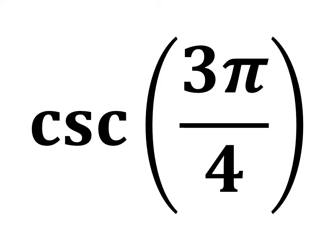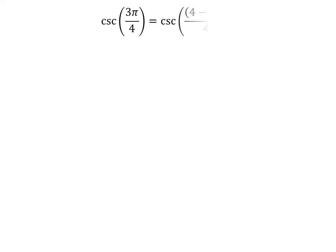In this video, we will learn to find the value of cosecant of 3 times pi upon 4. Two methods have been explained to find the value of cosecant of 3 times pi upon 4. Let us look into the first method.